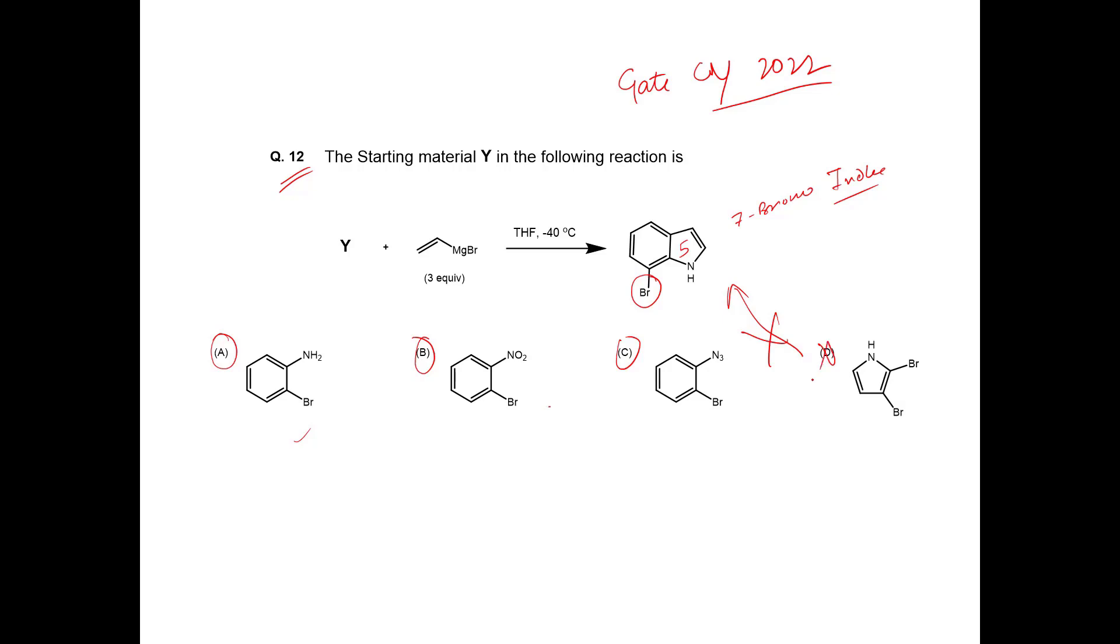Now from these three what will be our option? If you look closely into the reaction, it is forming indole. There are very few countable reactions on indole synthesis. But here they are specifying they are using Grignard reagent. So there must be only one reaction which employs Grignard reagent in the synthesis of indole, and that is Bartoli indole synthesis.